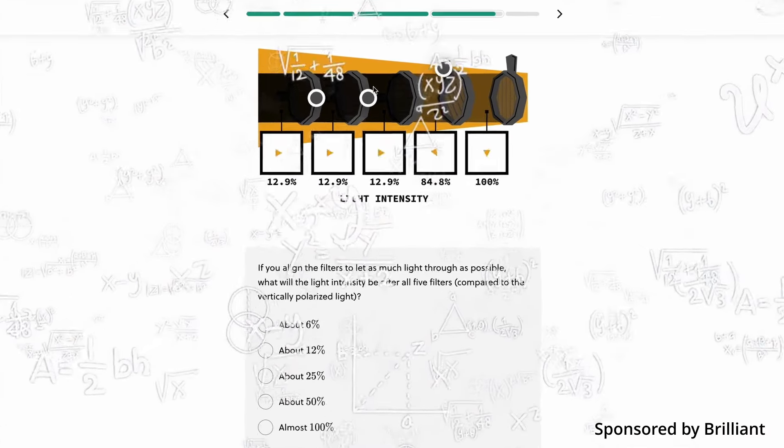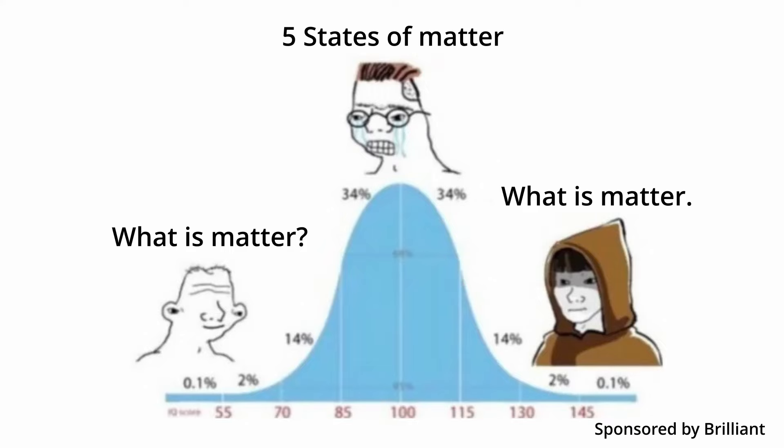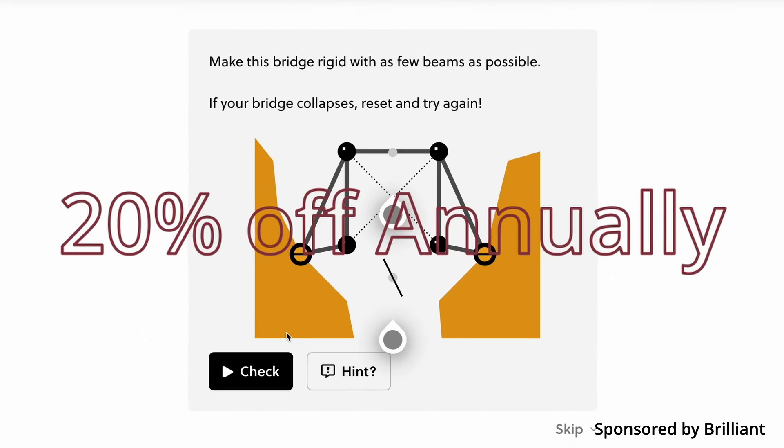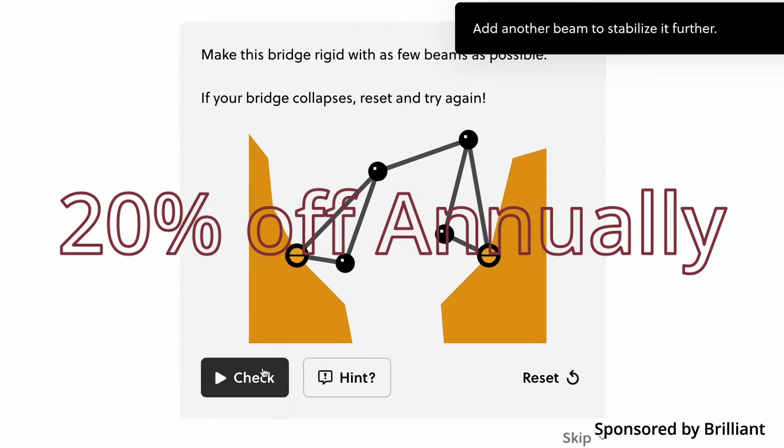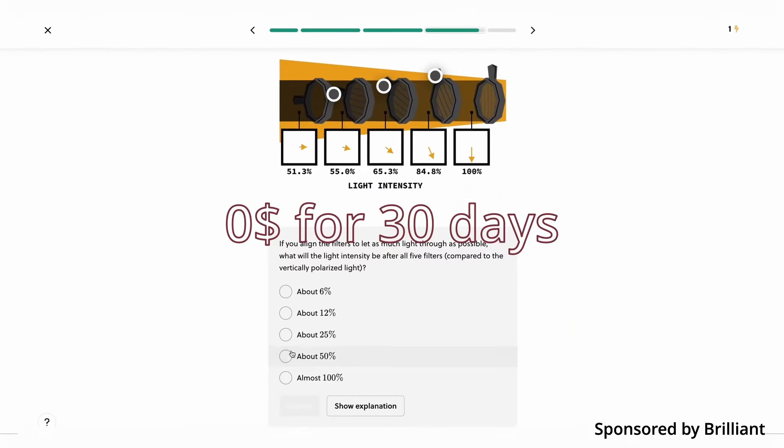They allow you to go from a basic understanding to flexing to all your teachers that there are actually way more than three states of matter. You can sign up to Brilliant to get 20% off an annual premium subscription. That's a lot. And try everything Brilliant has to offer for free for a full 30 days.